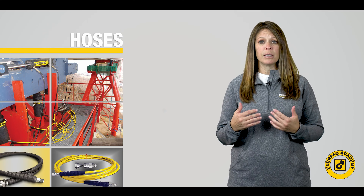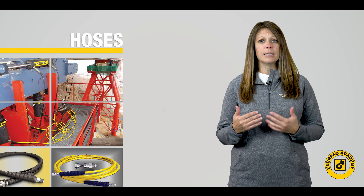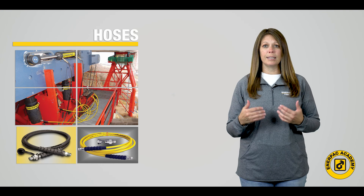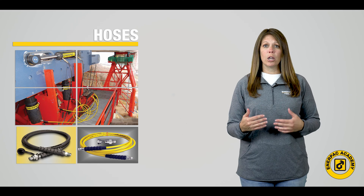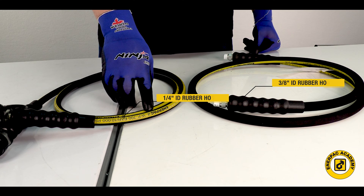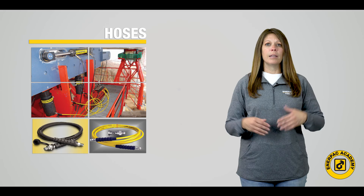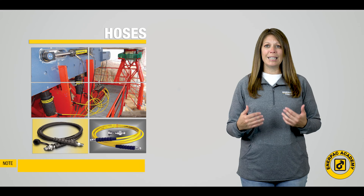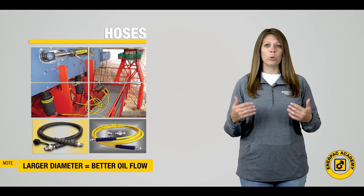To correctly specify an industrial high-pressure hose, we need to look at the system to guide us to the best hose selection. The selection process starts with the hose inside diameter, or ID. For most industrial high-pressure hoses, there are only two choices: a quarter inch and three-eighths of an inch, or 6.4 and 9.7 millimeters respectively. The inside diameter of the hose will determine how easily the oil flows through the hose — the larger the diameter, the easier the oil will flow.